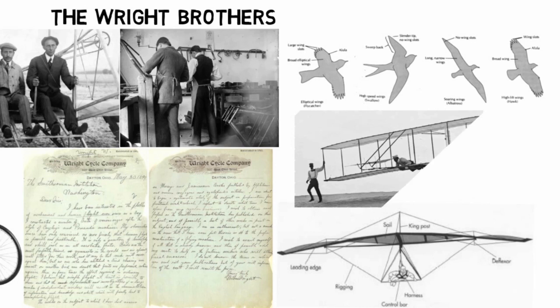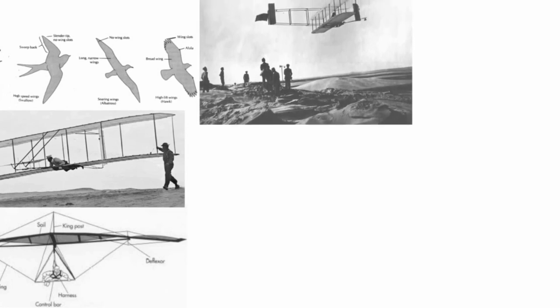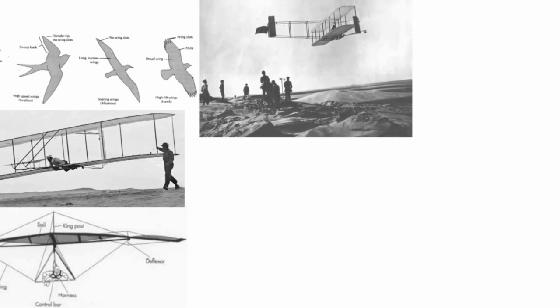Wilbur Wright discovered wing-warping when he found himself twisting the geometry of a long inner tube box. In 1901, the Wright brothers tested their biplane kite for wing-warping. By warping or twisting the end of its wings, they discovered that one side of the wings produced more lift than the other, and the difference in lift force made the kite bank in the intended direction. Success on the small scale took the Wright brothers to Kitty Hawk, North Carolina, in 1900, where its wind speeds and soft sand dunes provided ideal flight conditions for their Wright gliders.